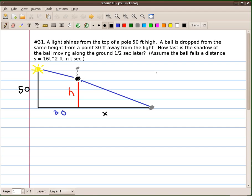which happens to be number 31 in our book, is a light shines from the top of a pole 50 feet high. A ball is dropped from the same height from a point 30 feet away from the light. How fast is the shadow of the ball moving along the ground a half a second later? Assume the ball falls a distance s equals 16t squared feet in t seconds.